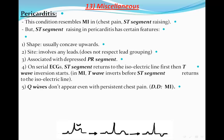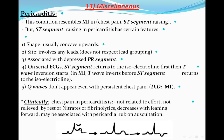T waves don't appear even with persistent chest pain — this is also a differentiation point between both entities. In pericarditis, the ST segment is concave upwards, then the ST segment returns to baseline, then the T wave starts to be inverted. In ST elevation MI, before the ST segment returns to baseline, the T wave will invert in a stage called the evolving stage.